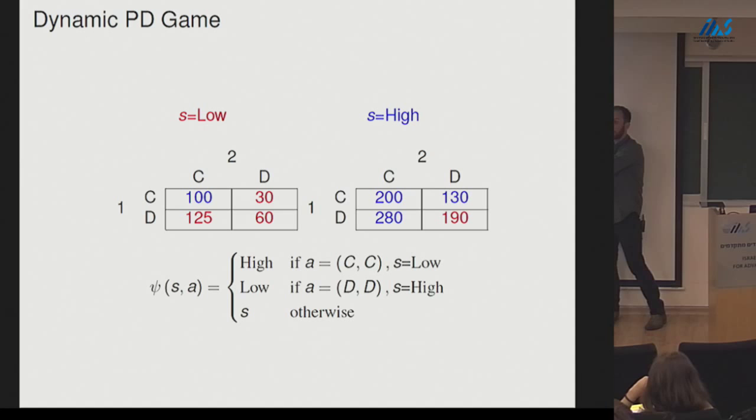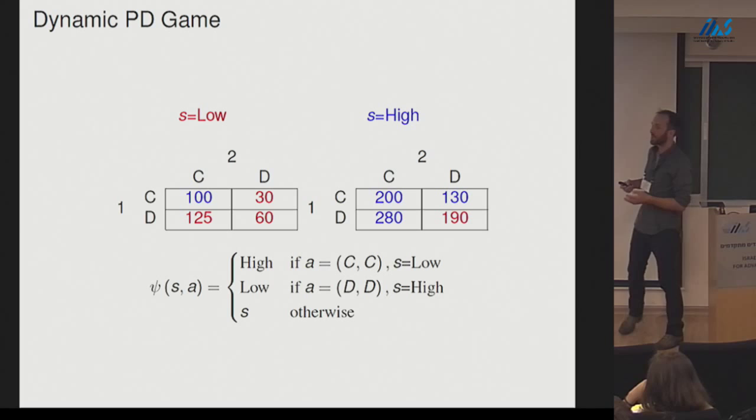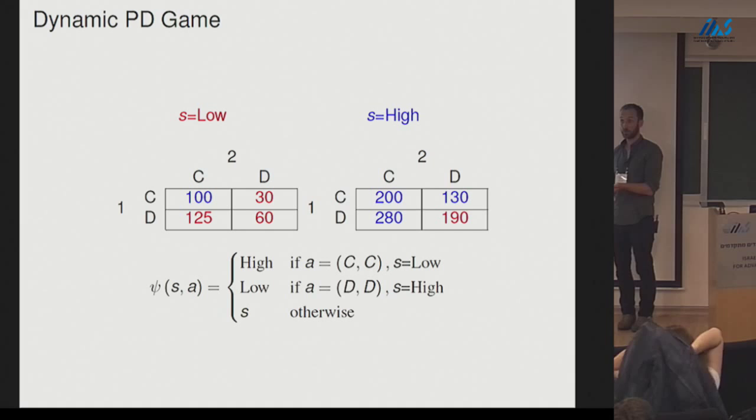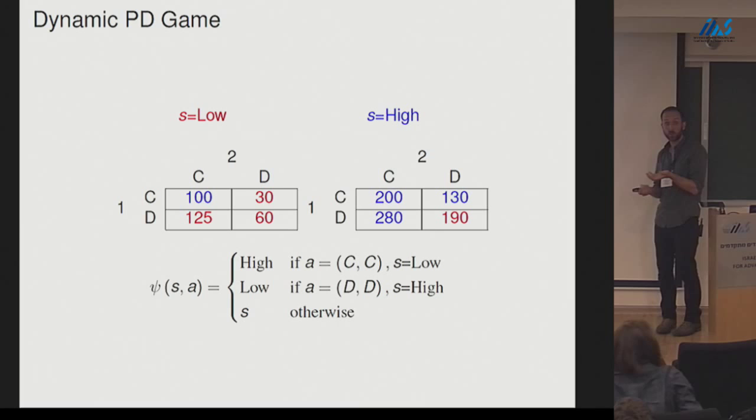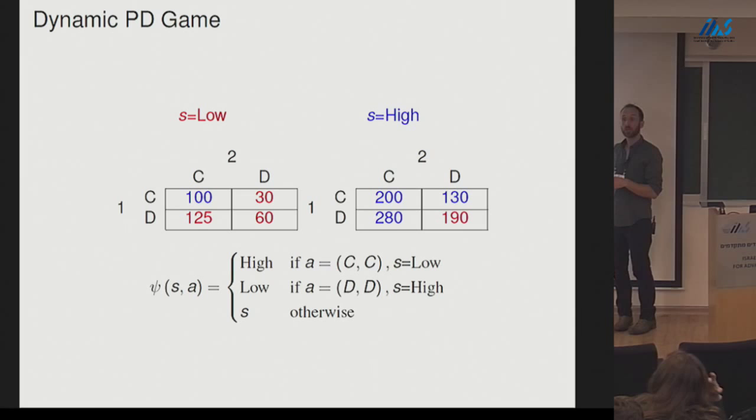I chose this game because it has a Markov perfect equilibrium that chooses different actions in different states — I want to test Markov, not something less like unconditional action. The unique pure symmetric Markov perfect equilibrium is MCD: cooperate in the low state, defect in the high state. There are also a pair of asymmetric Markov perfect equilibria. Starting the game in the low state, under Markov we should get the DD-forever outcome rather than the efficient sequence.